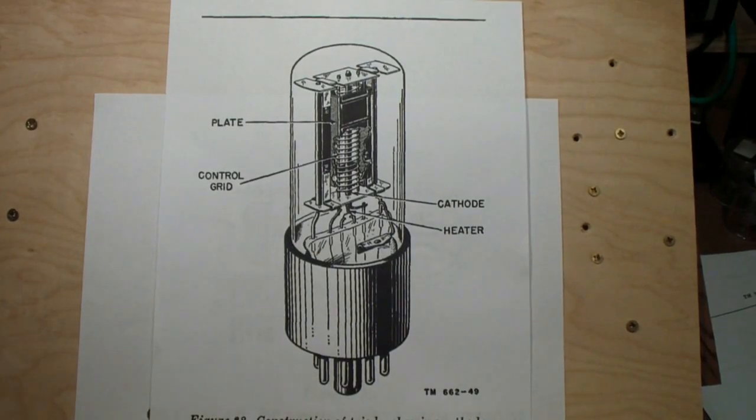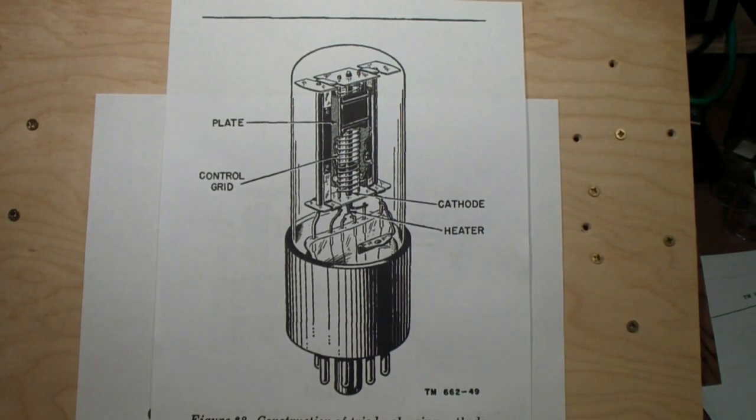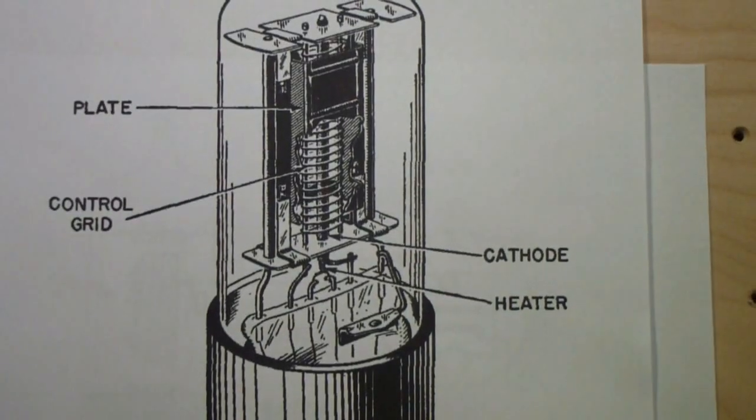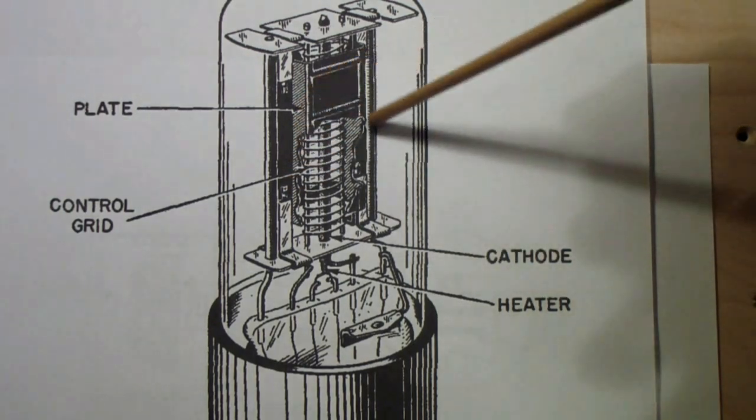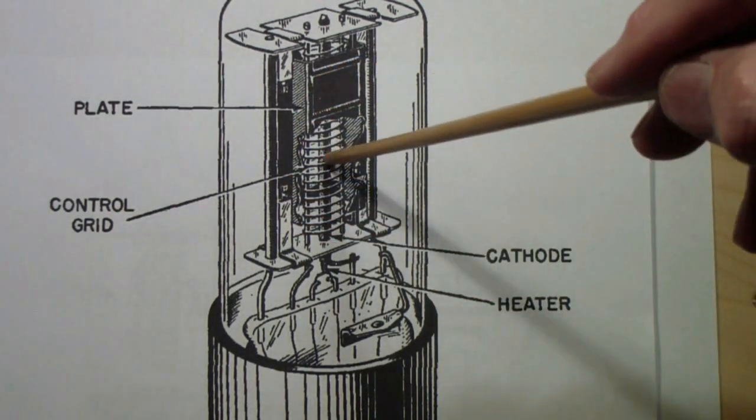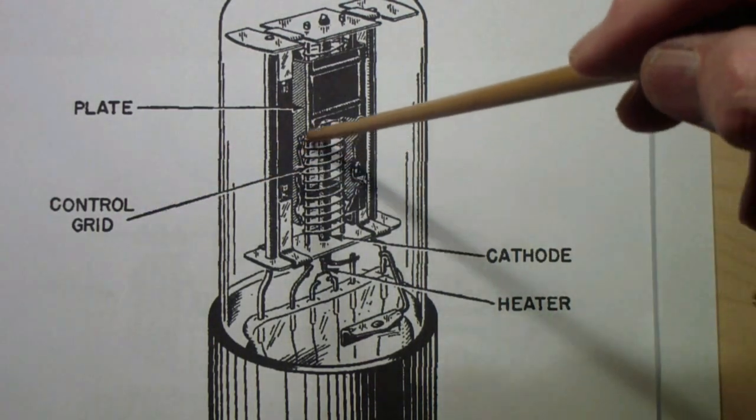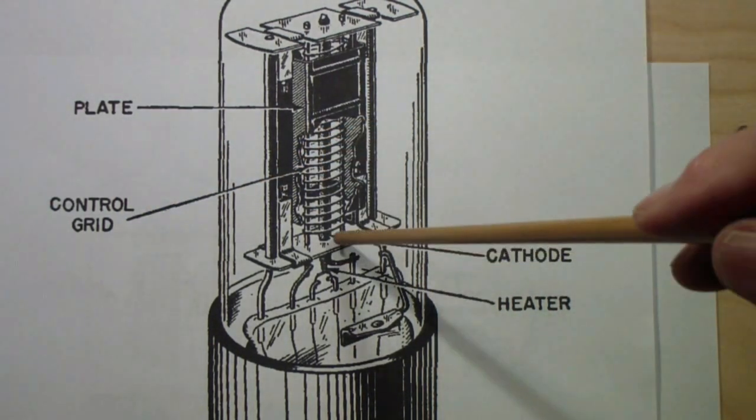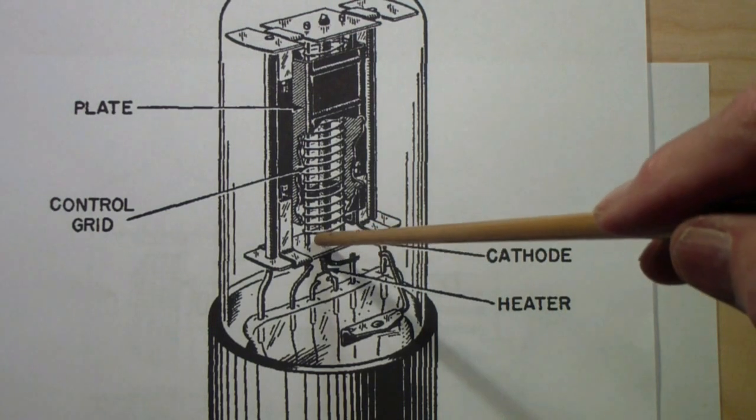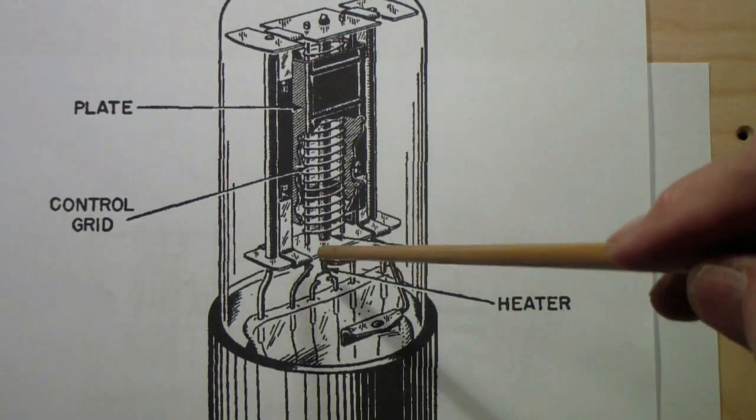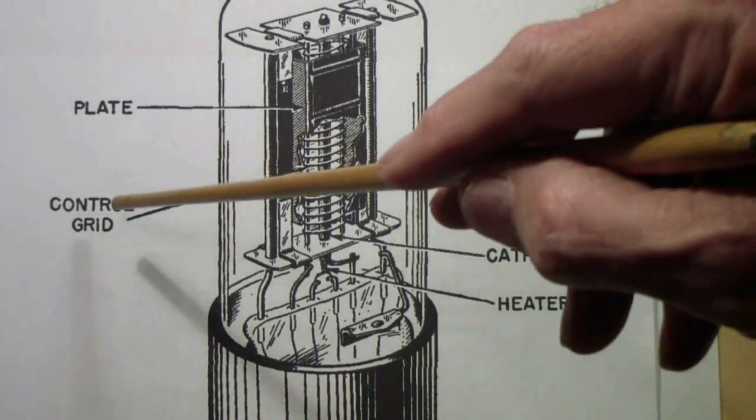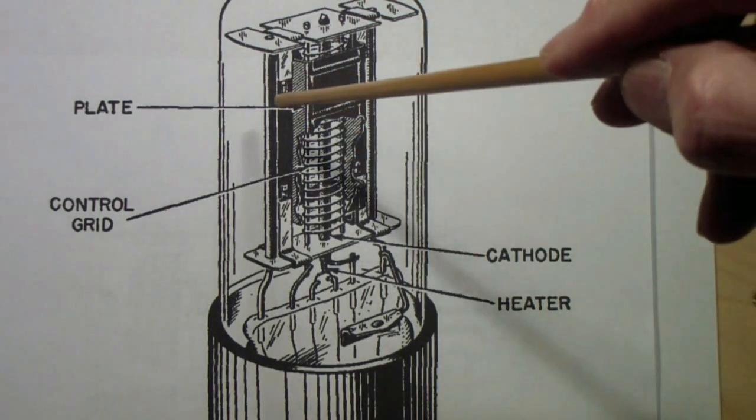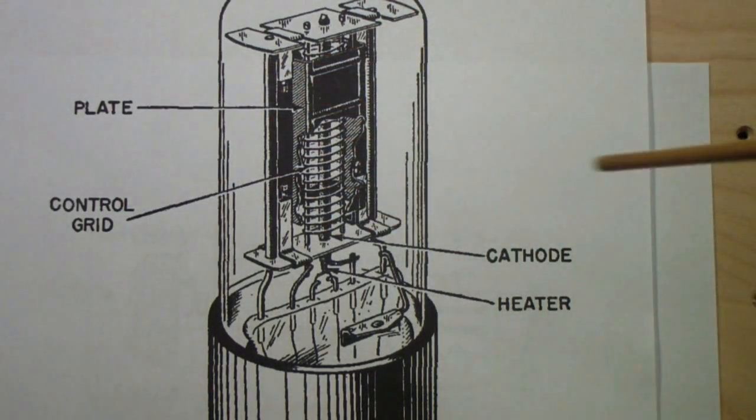Here is a cutaway view of the construction of a triode. Notice that the plate is on the outside. Inside, between the plate and the cathode, is the control grid. That's the spiral structure. On the very inside is the cathode, and inside the cathode is the heater, making this an indirectly heated cathode. Because it has three active elements, a plate, a control grid, and a cathode, it's called a triode.